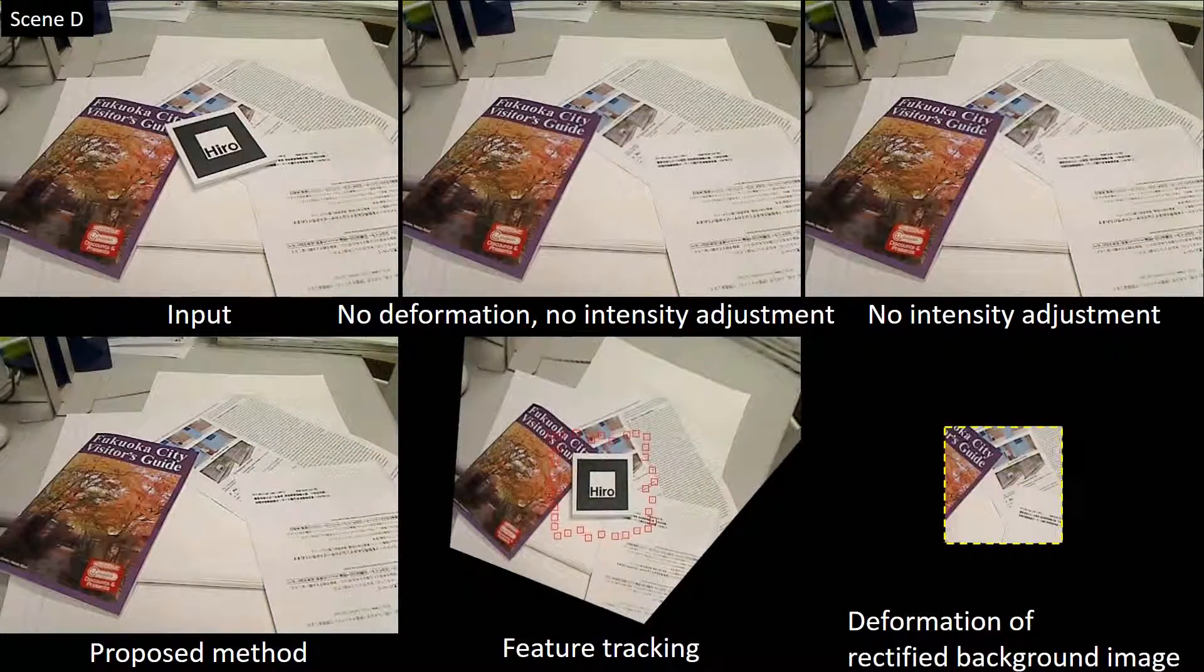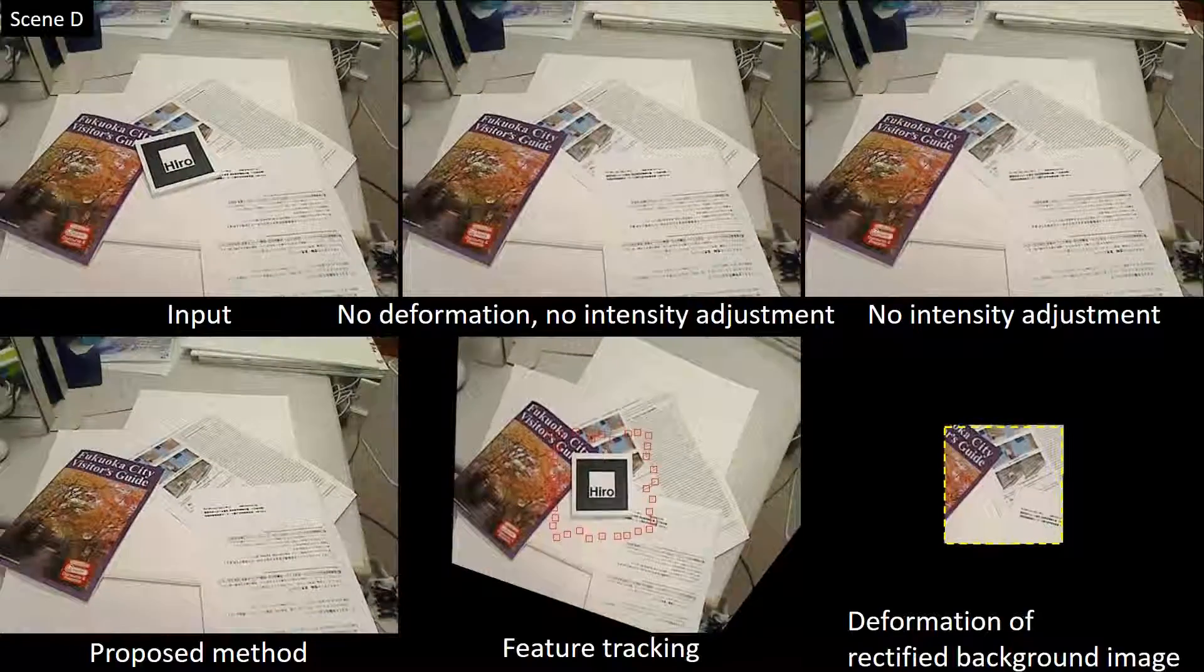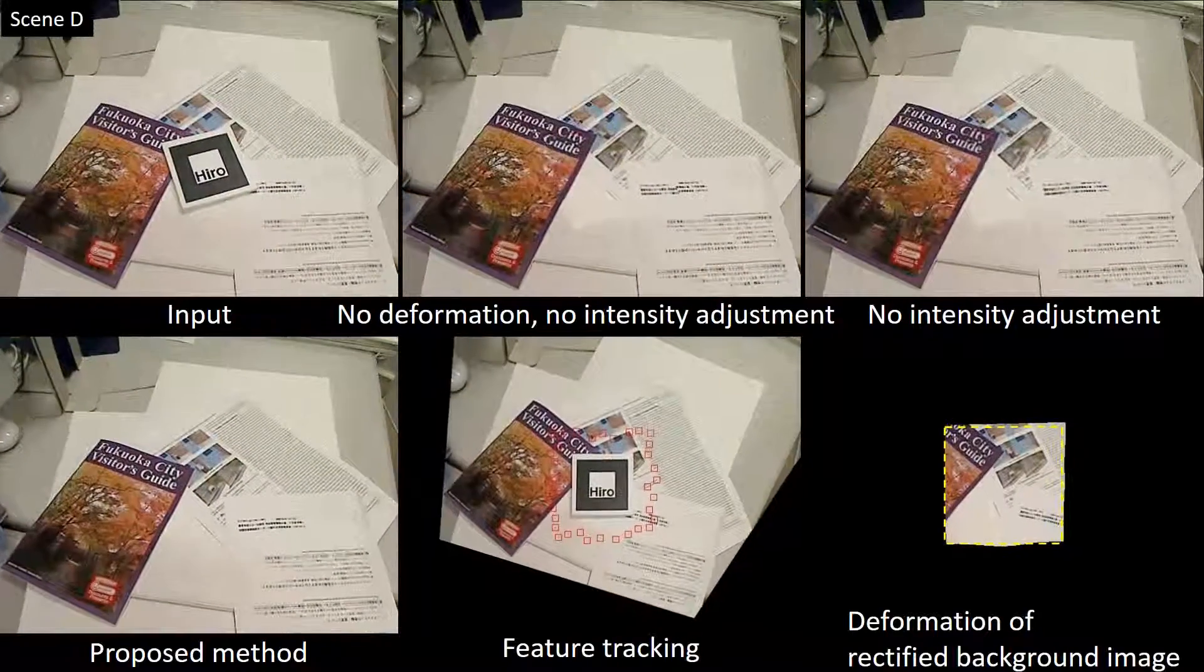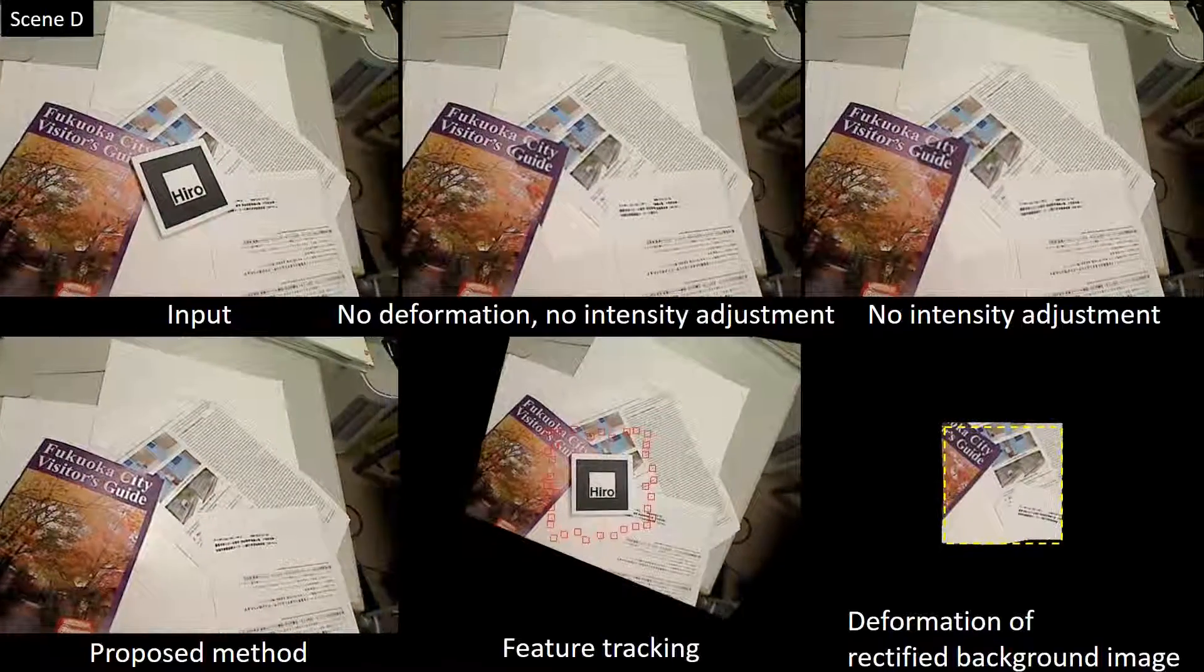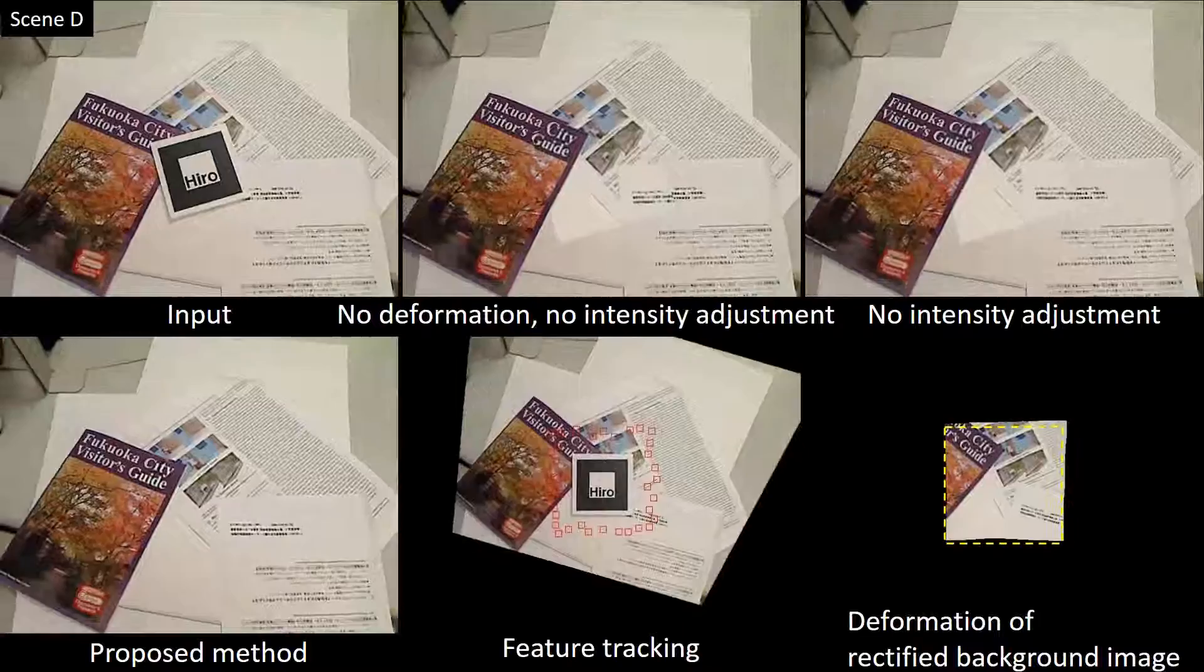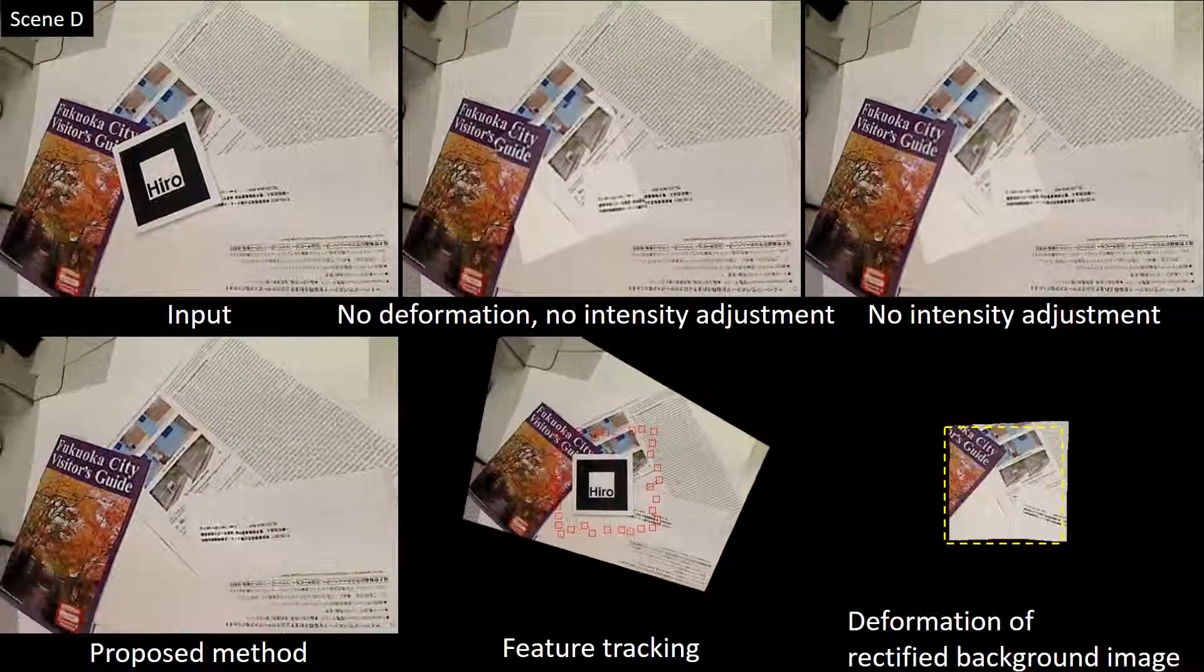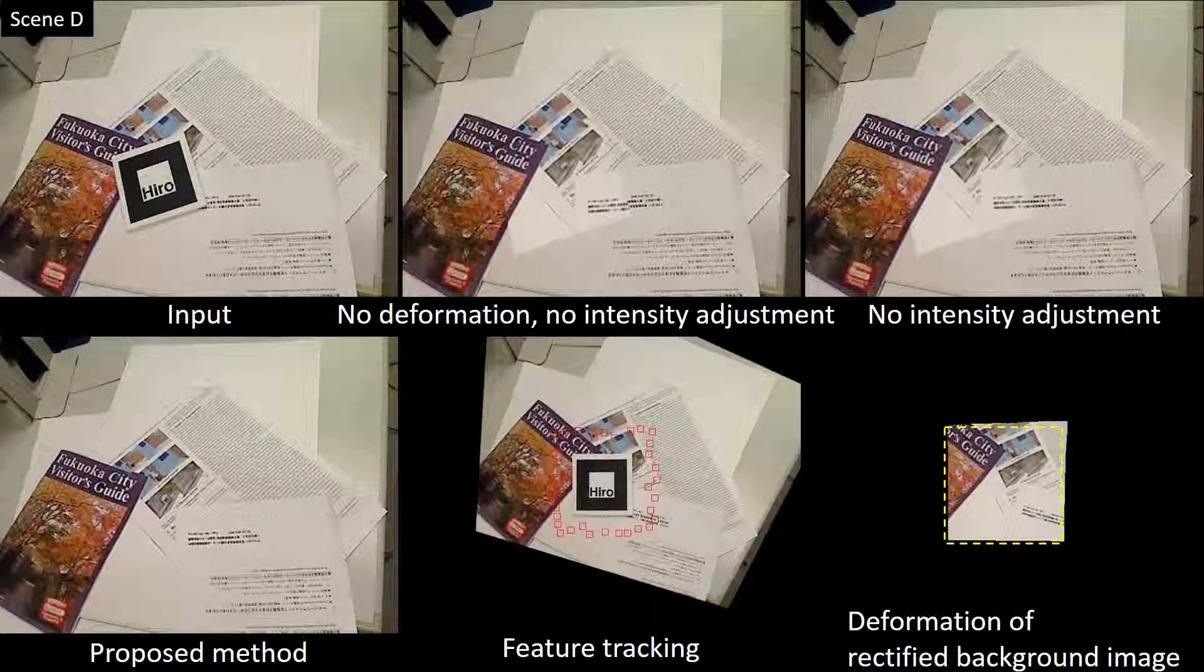In scene D, the marker is placed on a messy desk with a book, some sheets of paper with figures and text, and a blank notebook. Because these items are partially overlapping, the background geometry is slightly uneven. In the rectified frame, feature points are distributed almost uniformly on textured regions, edges, and even textureless regions.